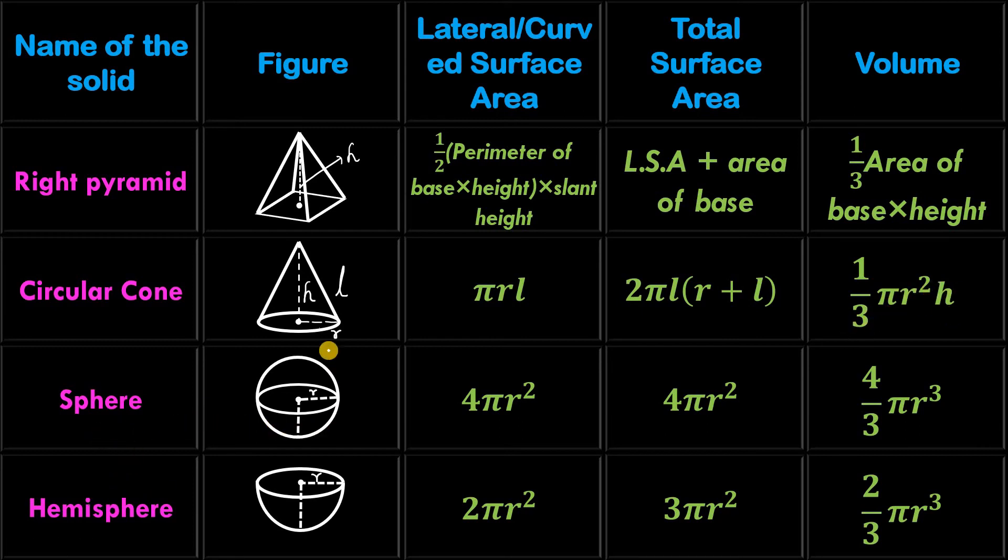Next, sphere. This is also a curved shape. Its curved surface area is 4 pi R square. And total surface area and curved surface area are same for sphere. Both are same. That is 4 pi R square. And its volume is 4 by 3 pi R cube.